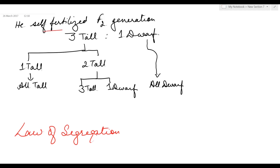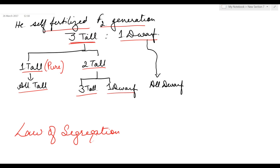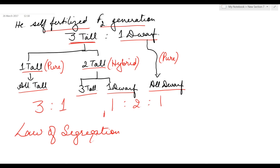He then self-fertilized the F2 generation — the 3 tall and 1 dwarf. He saw that of the 3 talls, 1 tall upon self-fertilization produced all tall offspring, which means this tall is pure. The other 2 talls again gave the ratio 3 tall to 1 dwarf, showing that these 2 talls are hybrid. While 1 dwarf upon self-fertilization produced all dwarf offspring, showing it is pure. This revealed that the 3:1 ratio is actually 1:2:1 — 1 pure tall, 2 hybrid tall, and 1 pure dwarf.